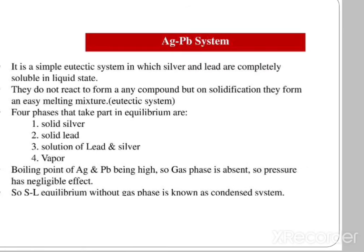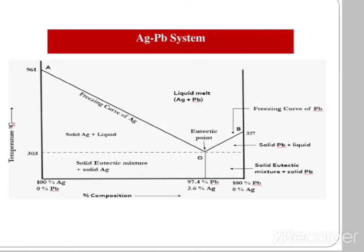Silver-Lead System: it is a simple eutectic system in which silver and lead are completely soluble in the liquid state. They do not react to form any compound, but on solidification they form an easy-melting eutectic mixture. Four phases take part in equilibrium: solid silver, solid lead, solution of lead and silver, and vapour. Since the boiling points of silver and lead are very high, the gas phase is absent, so pressure has negligible effect. This solid-liquid equilibrium without a gas phase is known as a condensed system.